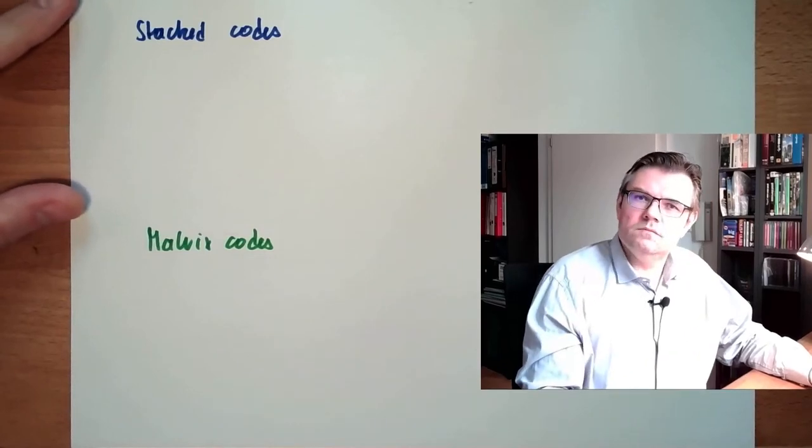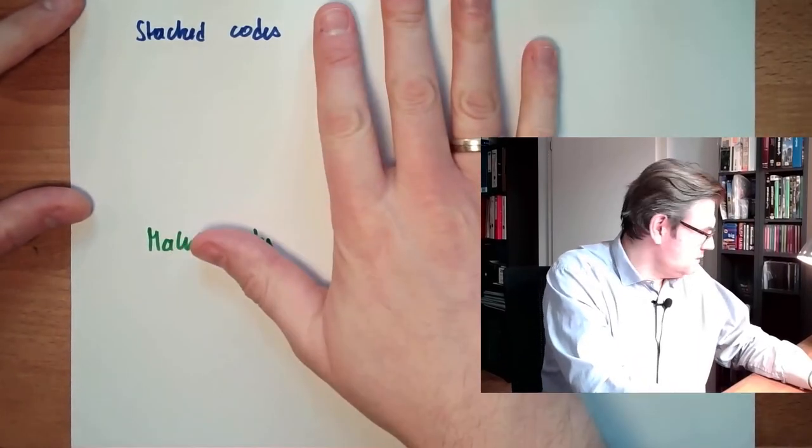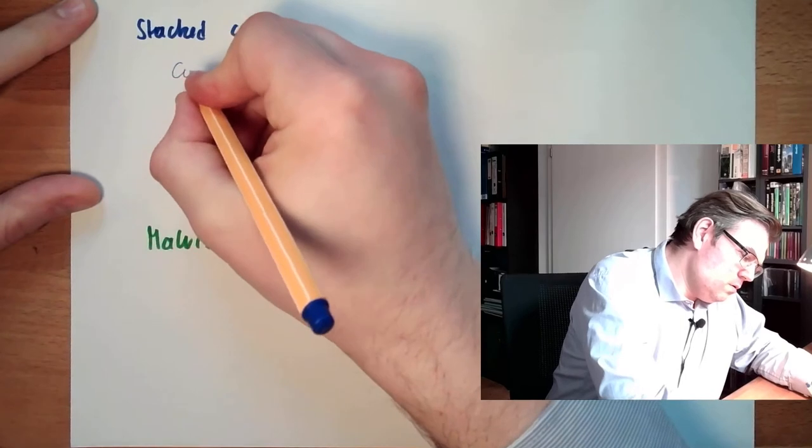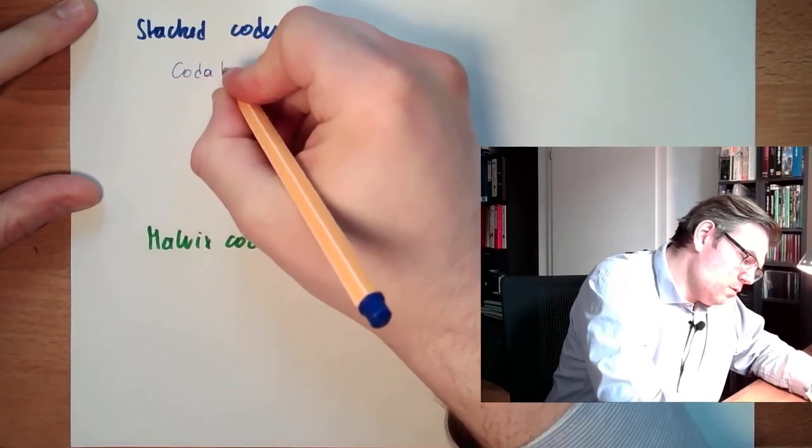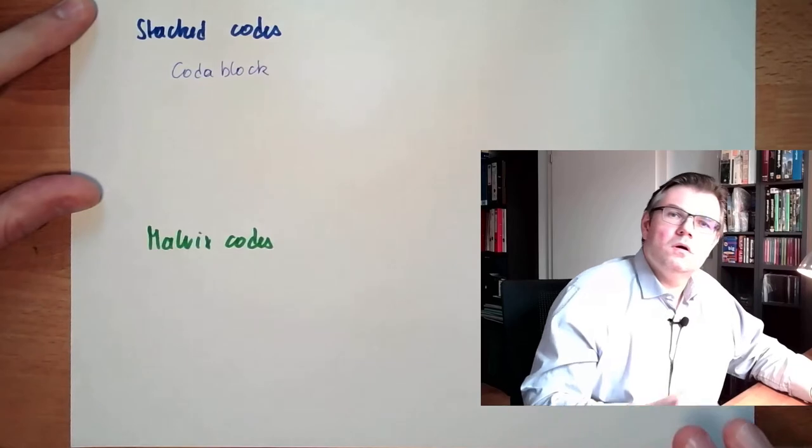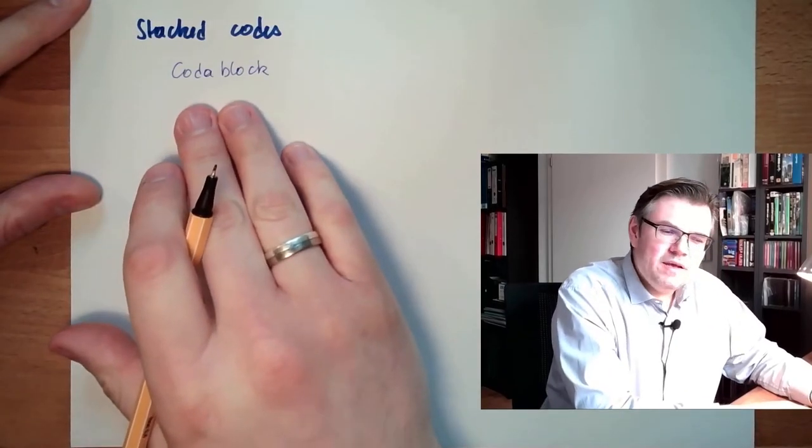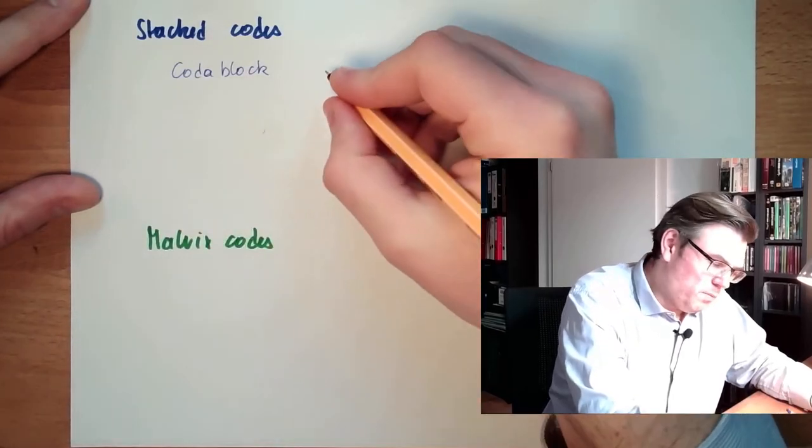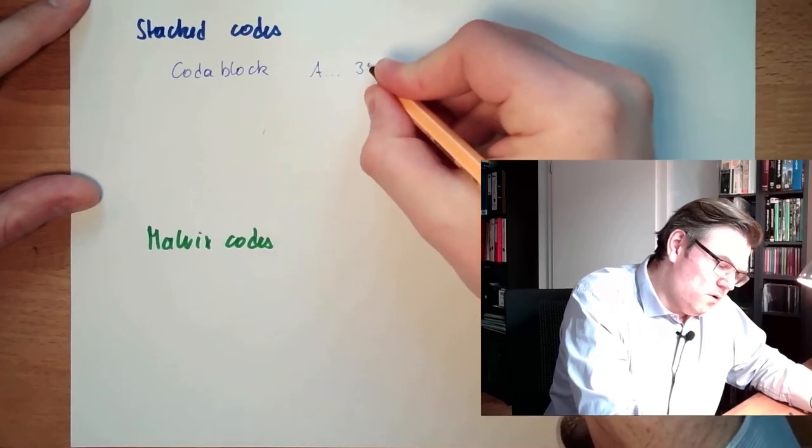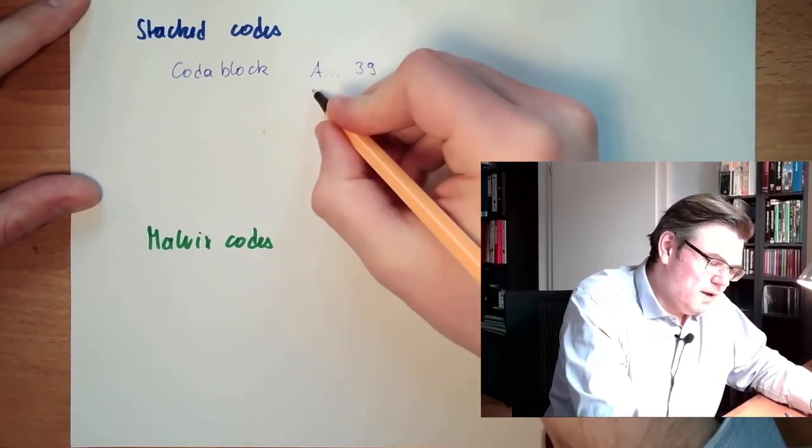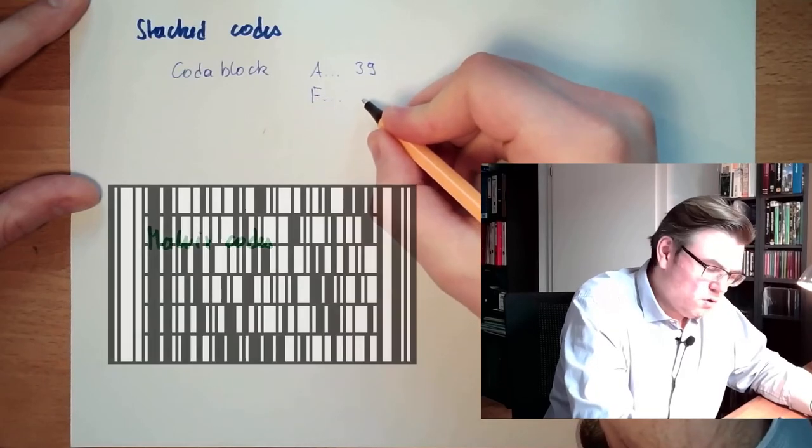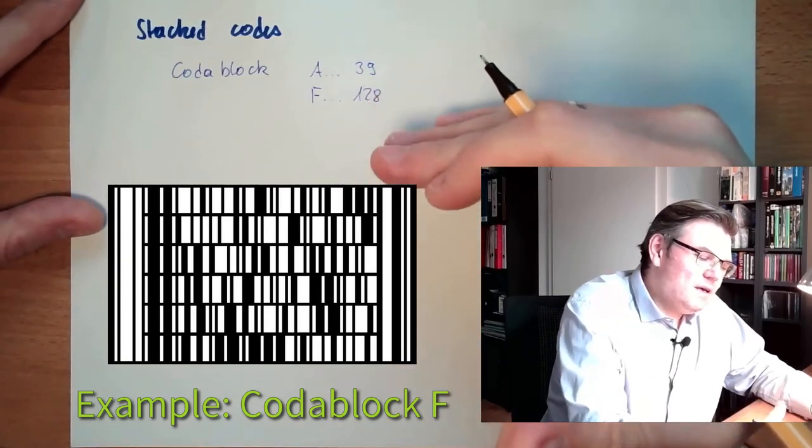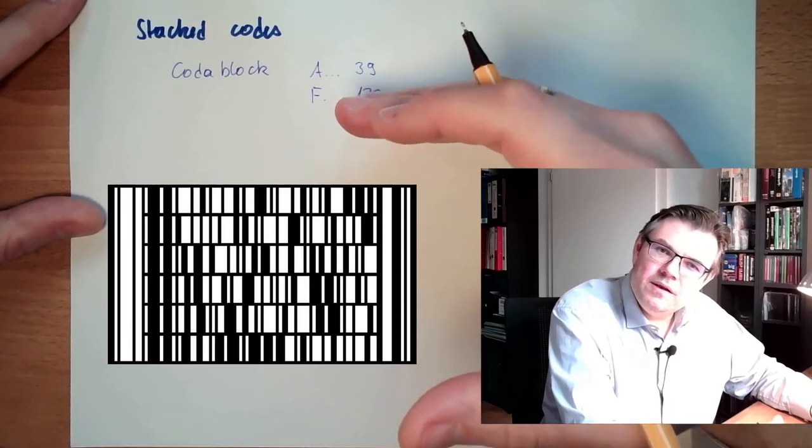I'll give you some examples. One possible stacked code would be CodaBlock. This CodaBlock is based on Code 39 or Code 128. There's CodaBlock A, which is based on Code 39, and there's CodaBlock F, which is actually based on Code 128. Basically it's Code 39 and Code 128 in lines.